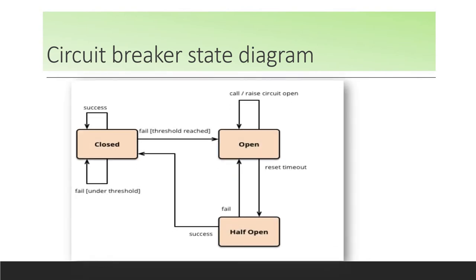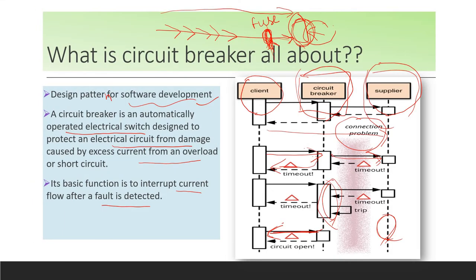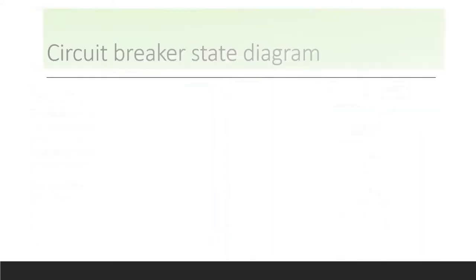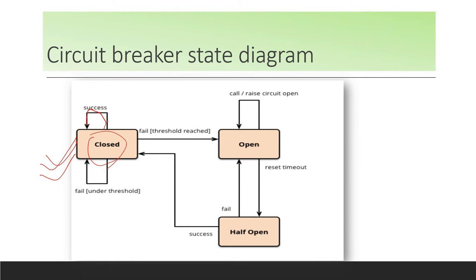This is the state diagram showing the different stages of a circuit. When the circuit is closed, everything is fine and any request passing through the circuit breaker makes a proper request to the supplier. You set a threshold for failure — for example, after how many failures per second you want to open the circuit. If there are 100 requests per second and you set a threshold of 10 failures per second, and your failure rate is only 9 per second, it will not open the circuit and will keep the circuit closed.